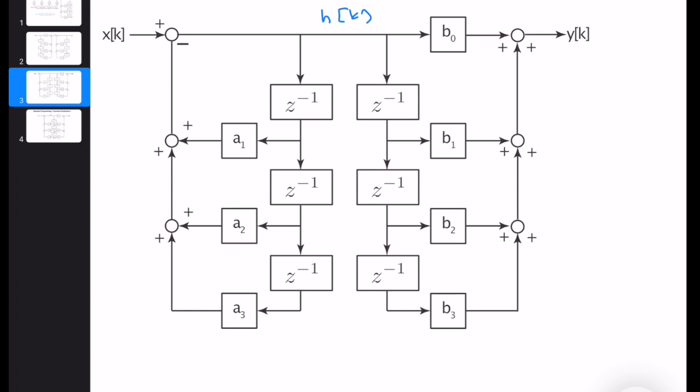This is the delay element, this is the delay element, and they're operating on the same input and producing the same output. Let's assume that this is h[k-1]. This will be h[k-2] and here it will be h[k-3]. I really don't need two parallel delay elements, so I can get rid of all of these and just connect them like this.